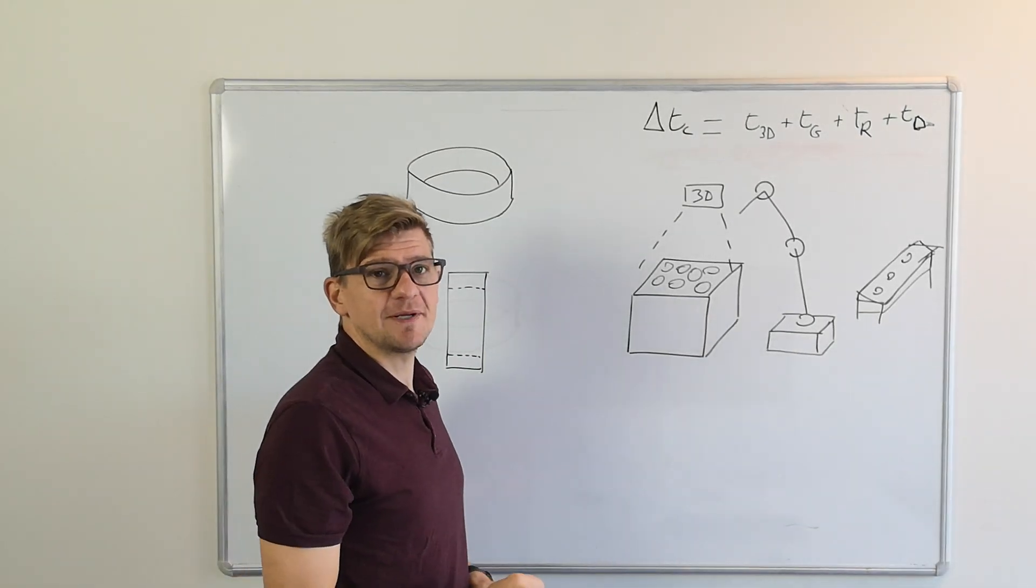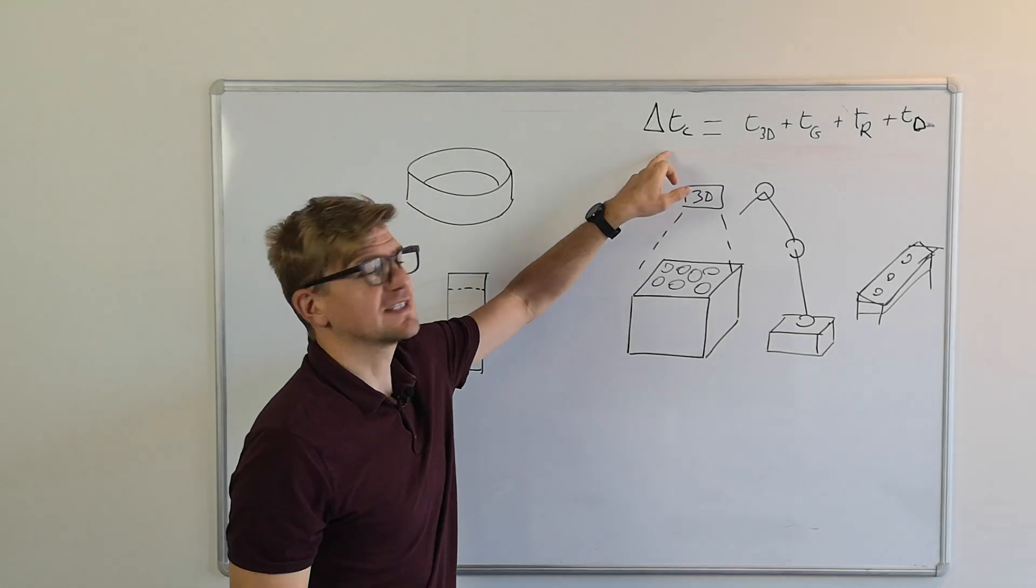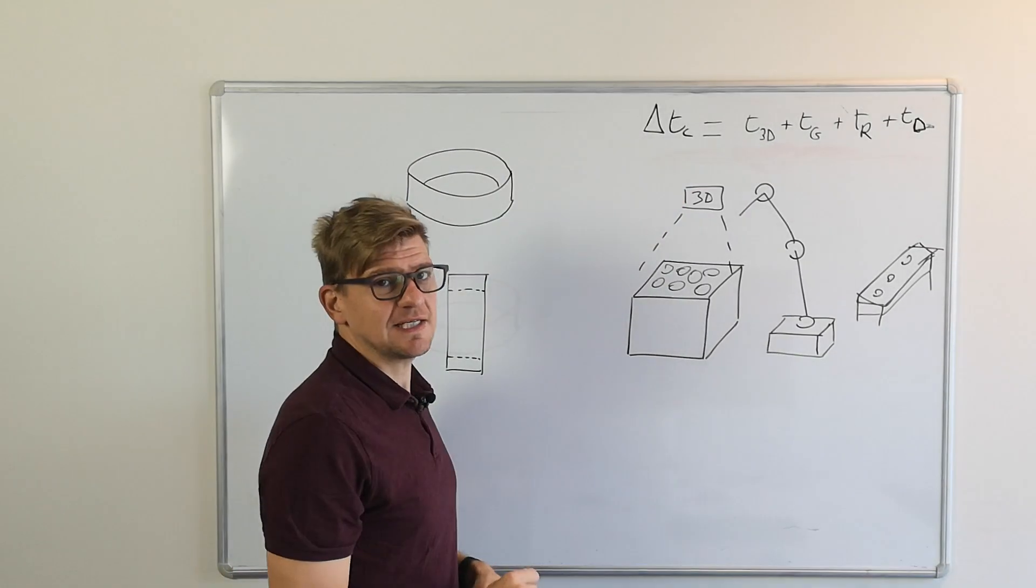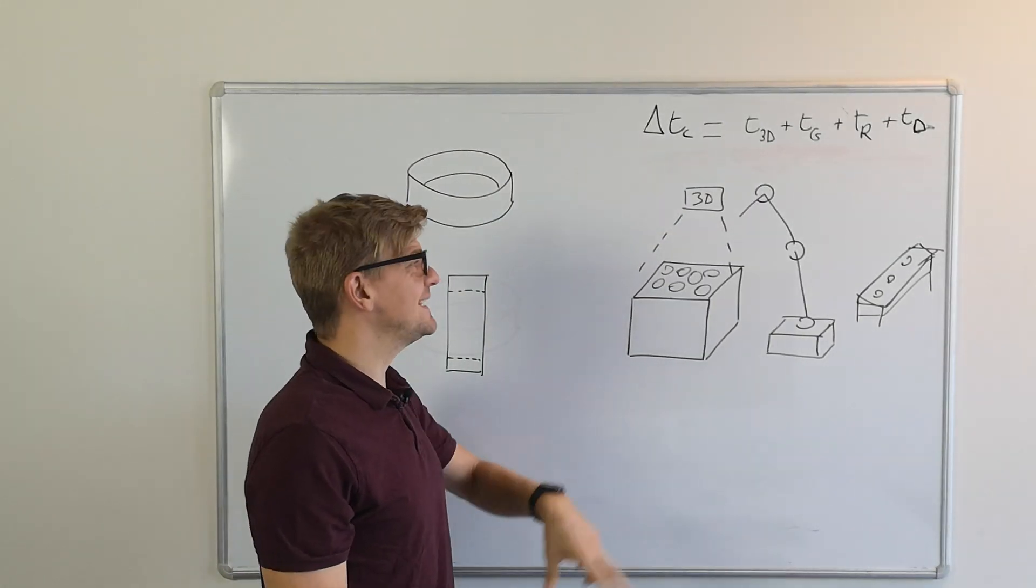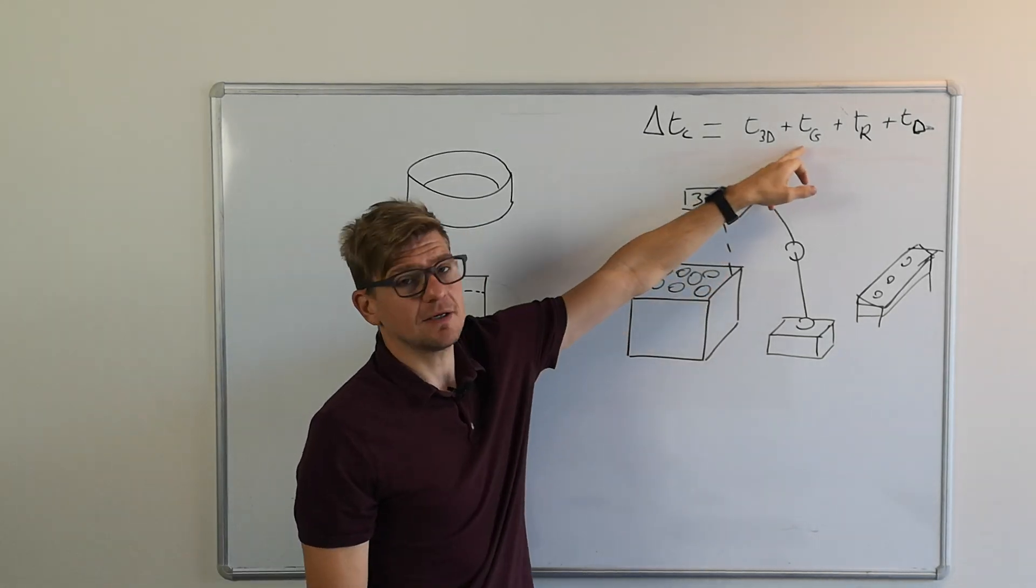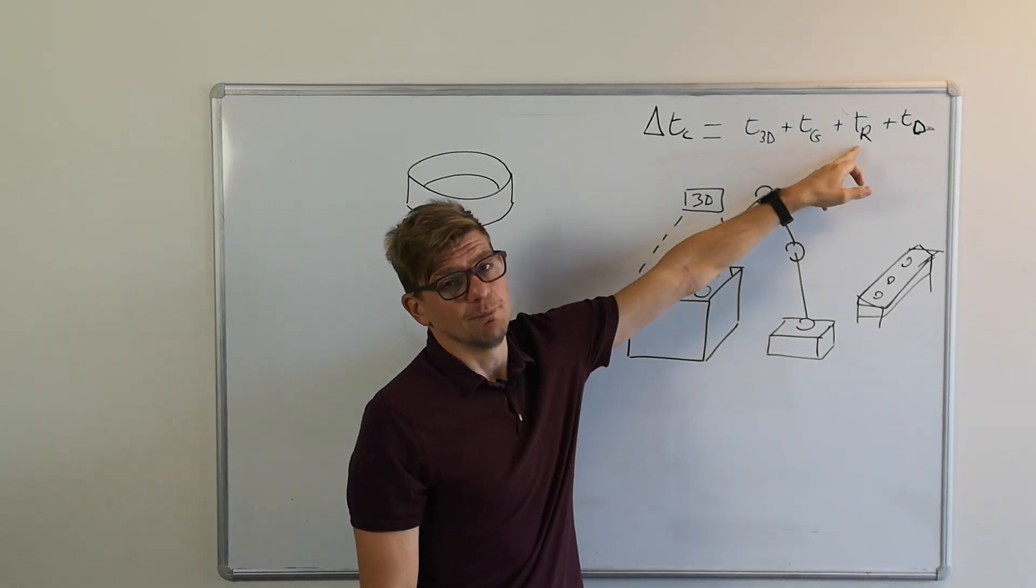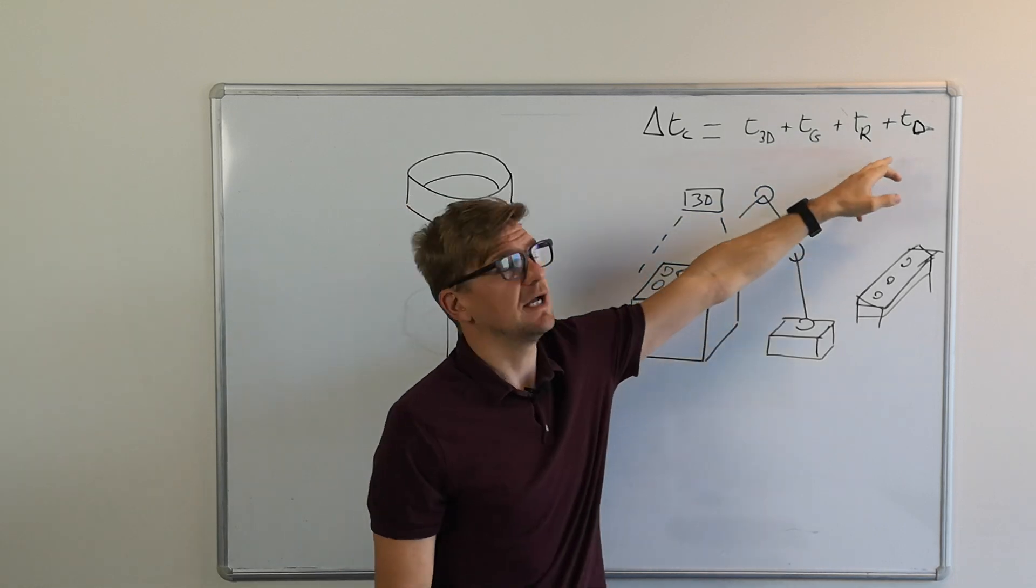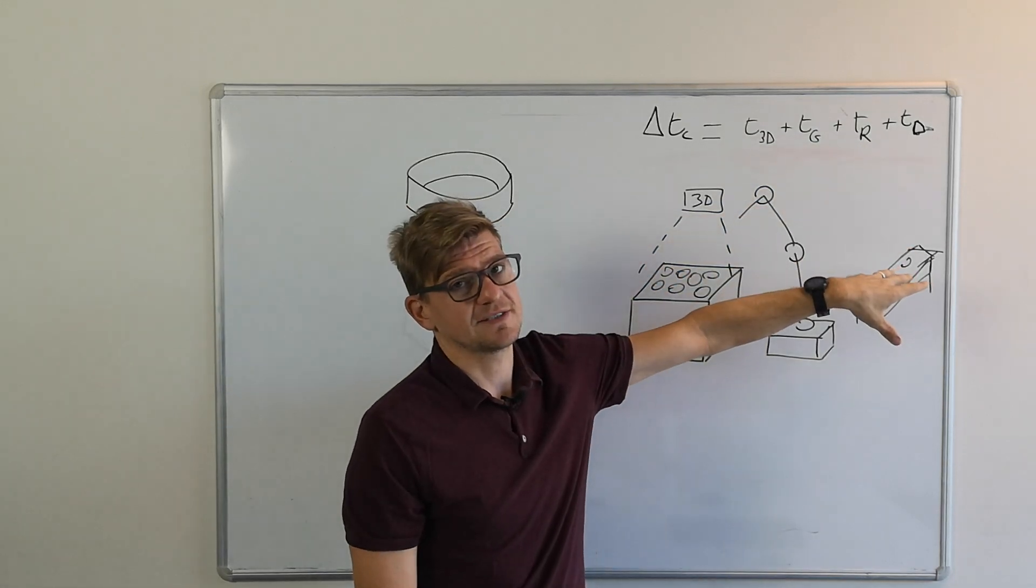Hi everyone, and welcome to another bin picking video where we're going to talk about cycle time. What is cycle time? Cycle time is the time needed to locate a part, pick the part, move the part with the robot, and drop the part onto your next step.